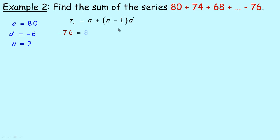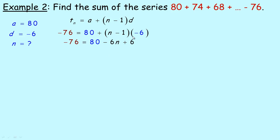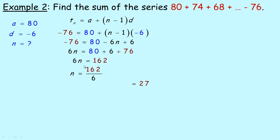Using the term formula and filling in the values: −76 equals a plus (n−1)d, where a is 80 and d is −6. Expanding: −76 = 80 + (−6)n − (−6)(1) = 80 − 6n + 6. Bringing the 6n term to the left: 6n = 80 + 6 + 76, so 6n = 162, and dividing by 6 gives n = 27. So −76 is the 27th term, meaning n is 27.